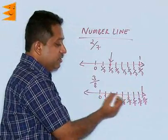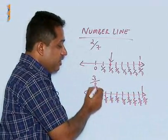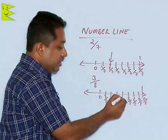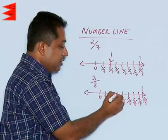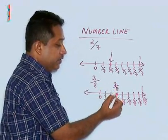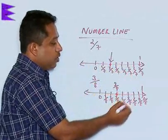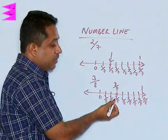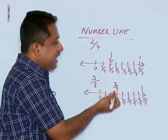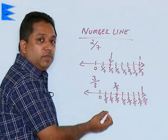Between 0 and 1 we have these divisions and we have to represent 3 by 8 and 3 by 8 is actually the third division after 0. So 3 by 8 will be this particular point. This is how we are going to plot positive rational numbers on the number line. We can also plot negative numbers similarly on the number line.